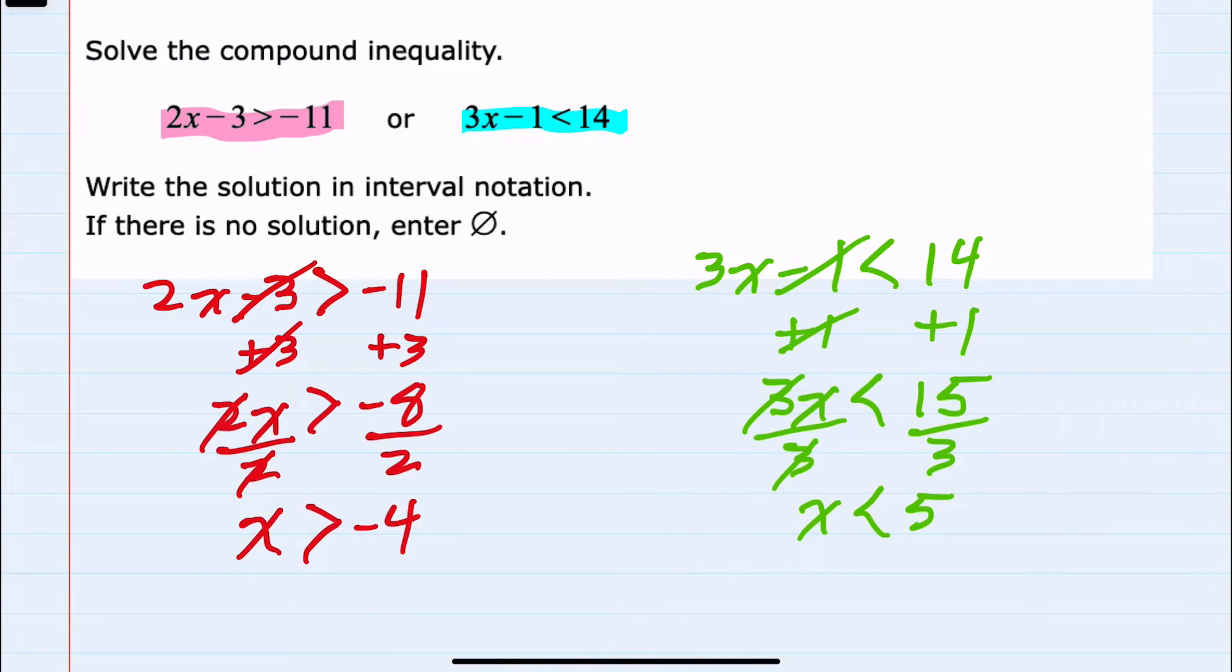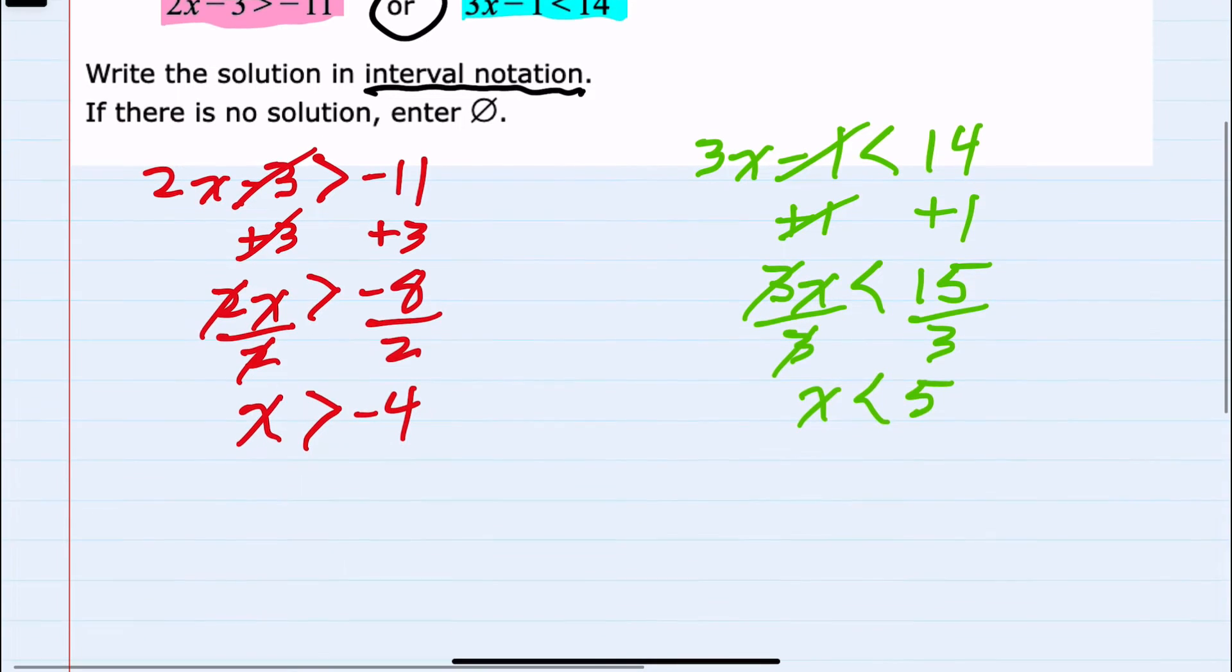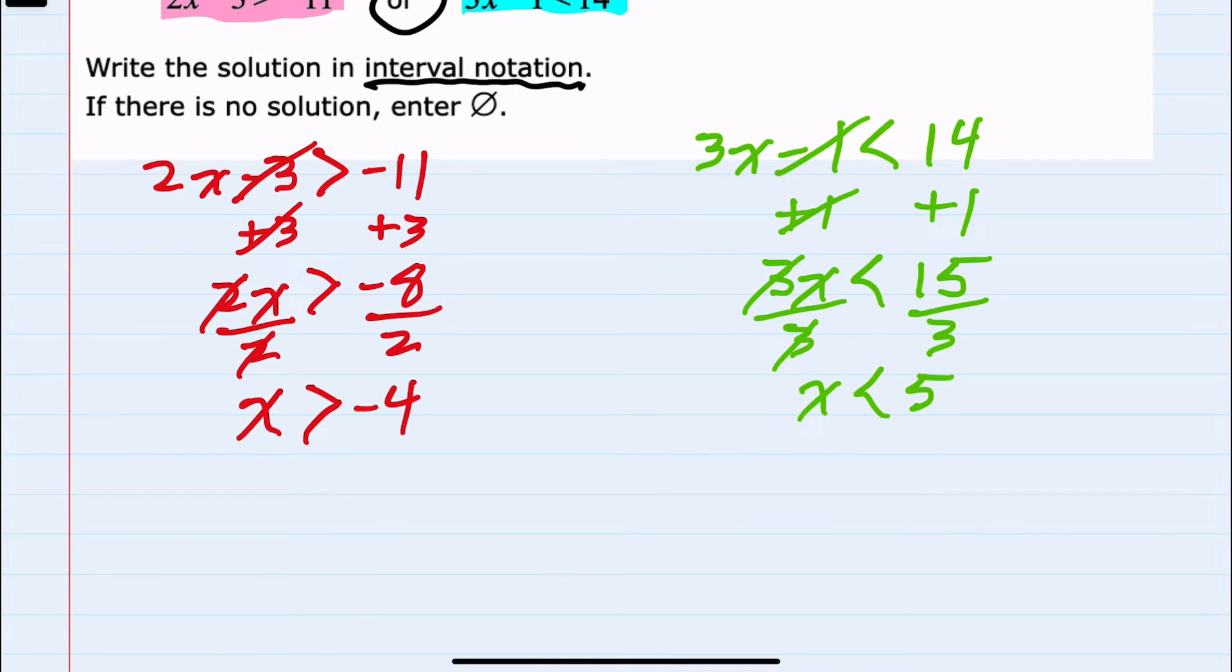And this is where the OR statement becomes important. I want to show, with interval notation, where either of these two inequalities exist. If it were an AND statement, I would need to show where they overlap. And it's usually helpful to compare both of these on a number line.